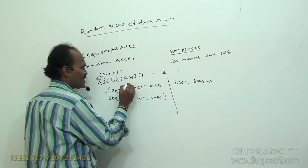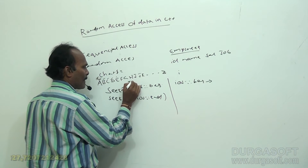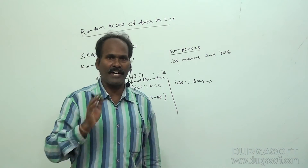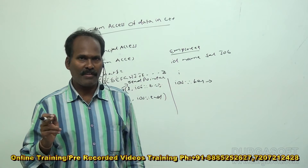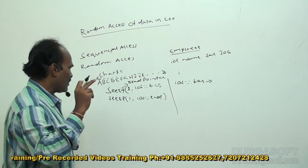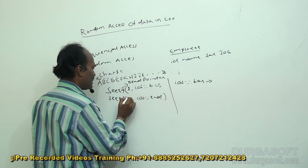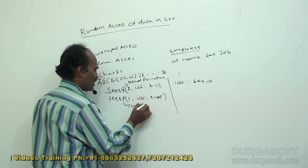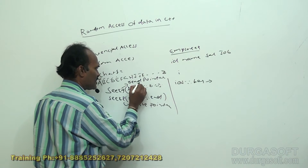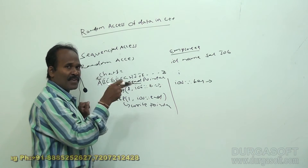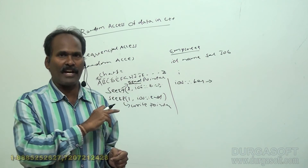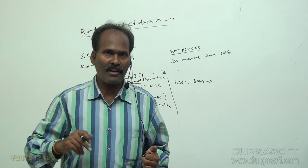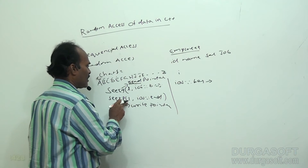What is g and what is p? 'g' is the read pointer — using this pointer we can read the data at a particular position. 'p' is the write pointer. At a particular position, if you want to write data, use the seekp function. seekp is the write pointer and seekg is the read pointer. Using the read pointer we can only fetch information; we cannot write data using it.